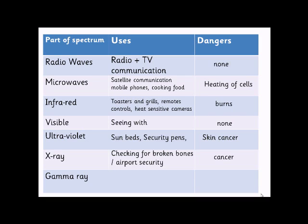X-rays are used for checking bones in hospitals — they reflect off bone but pass through skin quite easily. They're also used more controversially in airport security. The big risk is cancer, as X-rays are very ionizing and can damage cells and DNA. One or two X-rays aren't dangerous, but getting into double figures requires weighing the risks against the benefits.